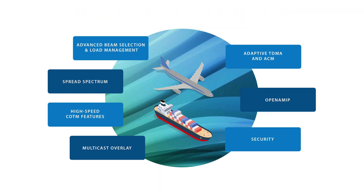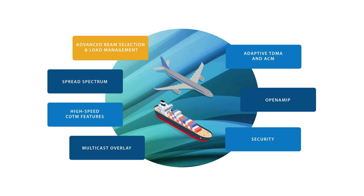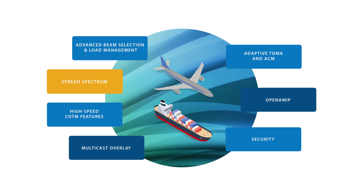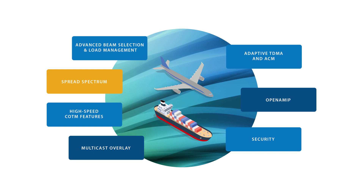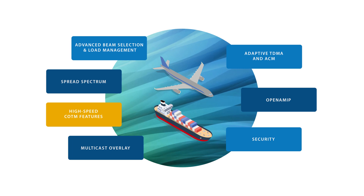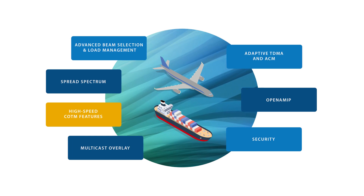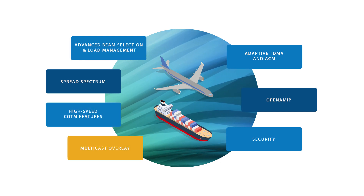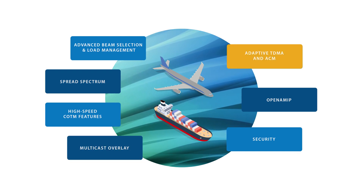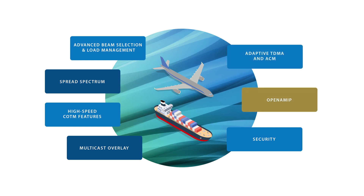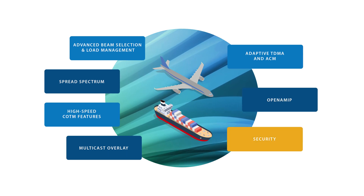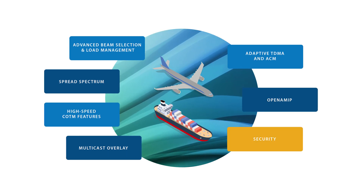Velocity 2.0 features enhanced beam selection and load management functionality, allowing you to optimally manage the beam load across all remotes in your network. The spread-spectrum waveform supports very small antennas on aircraft, maritime, and land-based vehicles. Other high-speed communications on the move features include Doppler compensation, fast reacquisition after blockage, and fast beam switching. Persistent multicast overlay provides efficient broadcast capabilities in aero networks. Adaptive TDMA and ACM provide optimized link capacity for variable conditions. OpenAMIP facilitates the exchange of information between the antenna and satellite router, and all remotes feature 256-bit AES link encryption for secure communications.